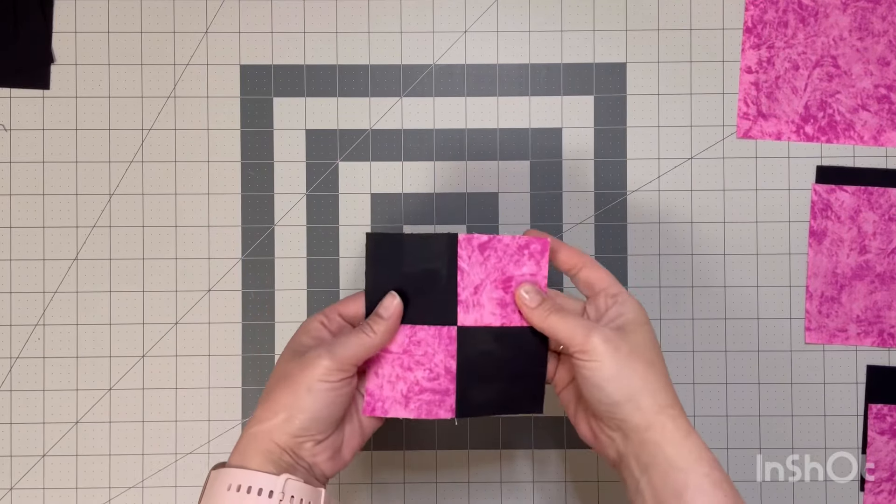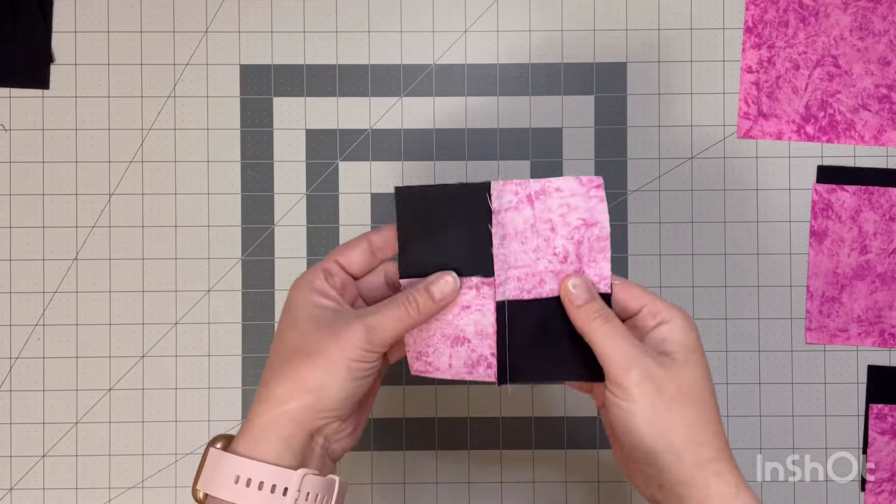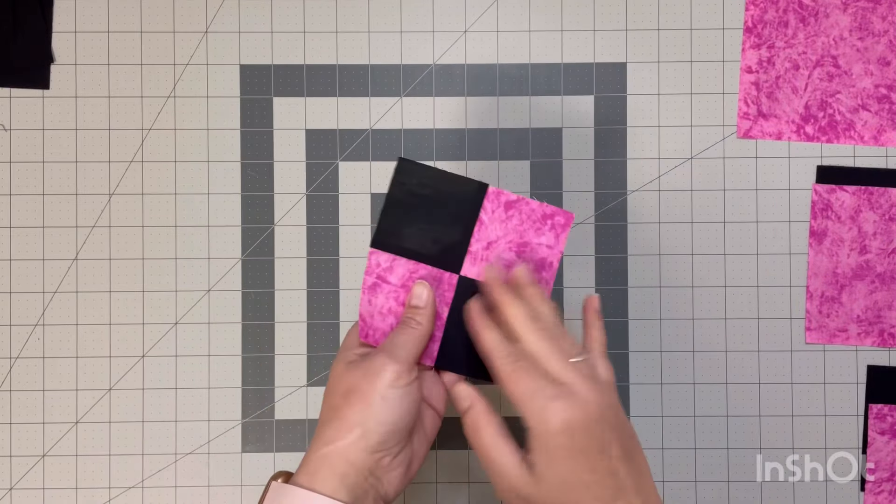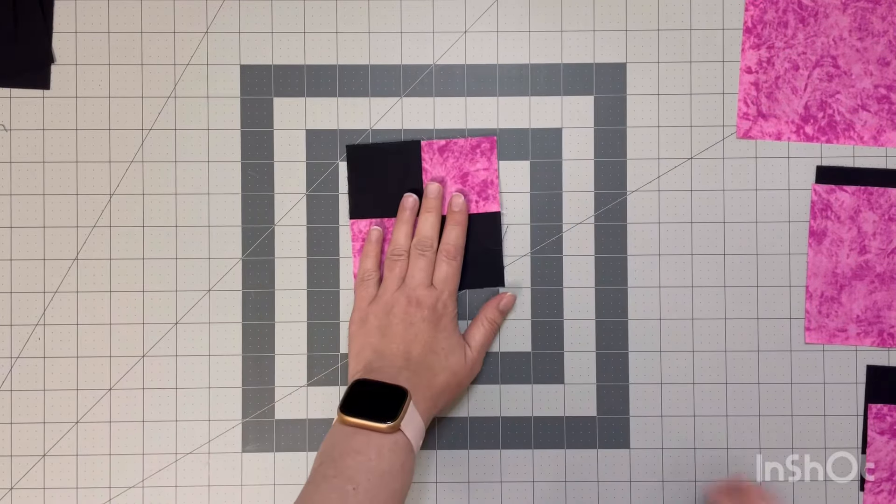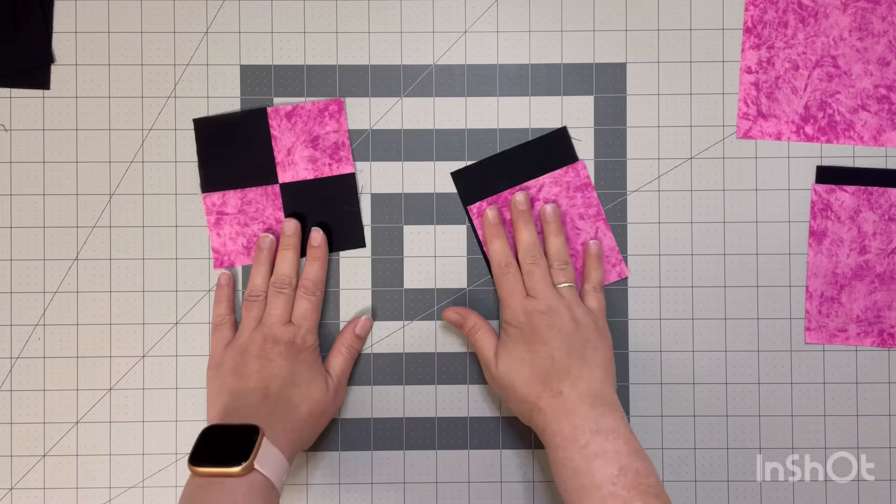This block actually comes together very easily. What I did here is I made sure that I pressed to the black, that way I would know that my seams would nest, and I like that because then I can get my points to look nicer.